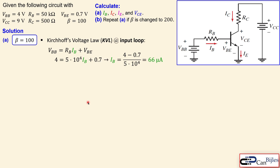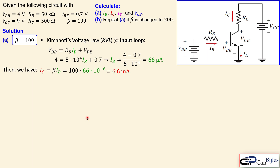Working out the equation gives IB equal to 66 microamps. Assuming the transistor is operating in the linear (active) region, the collector current IC equals beta times IB, so 100 times 66 microamps gives 6.6 milliamps. The emitter current IE equals (beta + 1) times IB, so 101 times 66 microamps gives 6.666 milliamps.